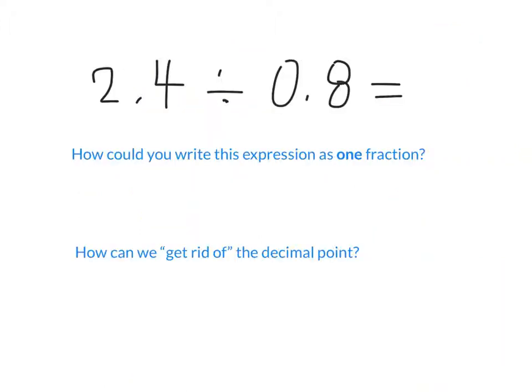As promised this is a decimal divided by a decimal. How do I say this decimal in word form? Two and four-tenths. Good. What about this one? Eight-tenths. Now here's my challenge for you. Yesterday we were writing it into fraction form right? That's not my challenge for you today. I want you to take this whole entire expression 2.4 divided by 0.8 and write it as one fraction. How can we do that?